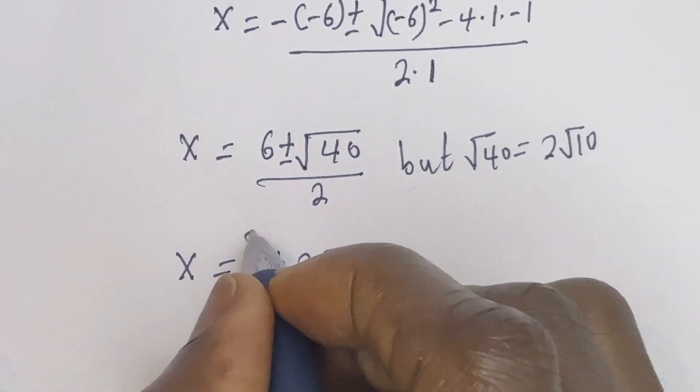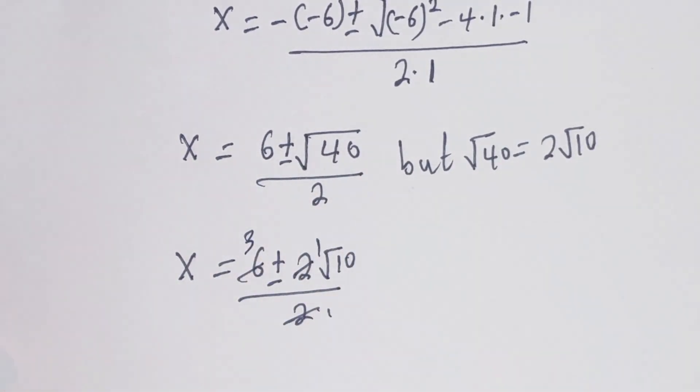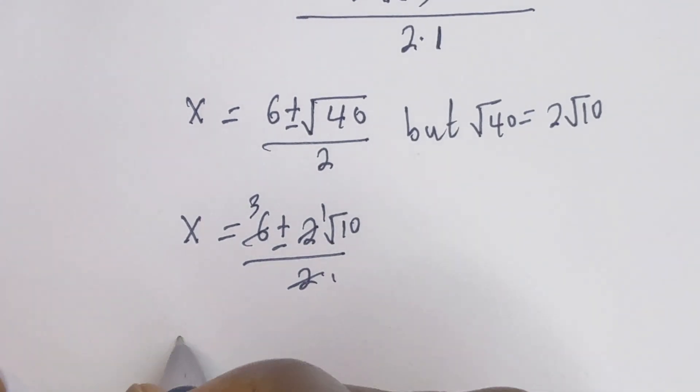2 here, 3. 2 here, 1. Therefore, x is equal to 3 plus or minus square root of 10.